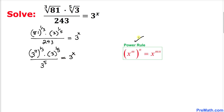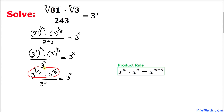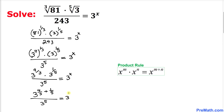Now let's apply the power rule. This gives us 3 to the power 4 over 3, times 3 to the power 1 over 5, divided by 3 to the power 5, equal to 3 to the power x. On the numerator we apply the product rule since the bases are the same, giving us 3 to the power (4 over 3 plus 1 over 5), divided by 3 to the power 5, equal to 3 to the power x.